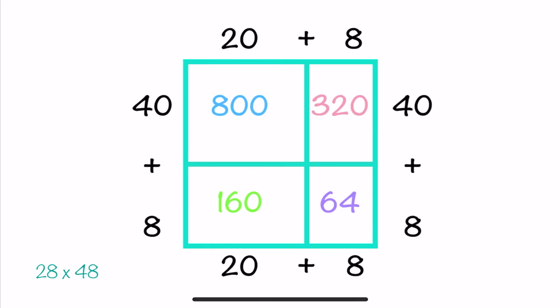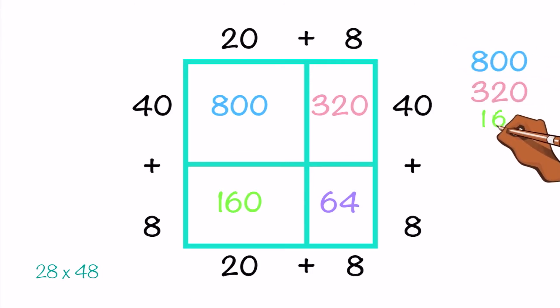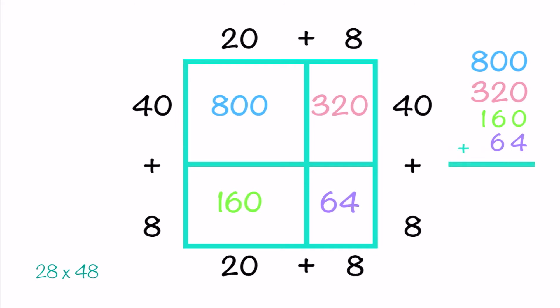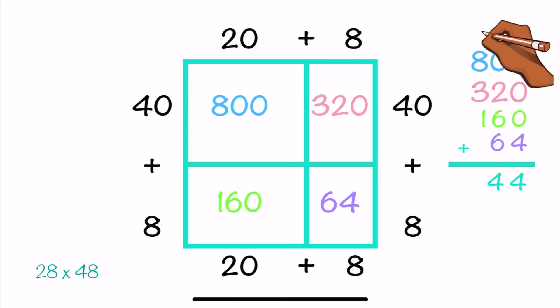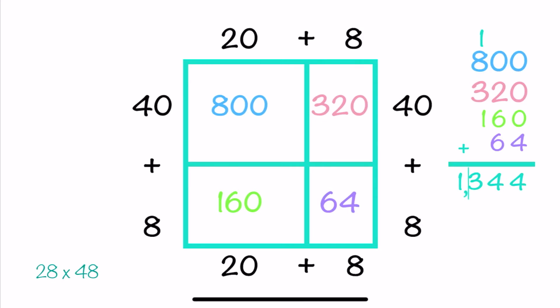Last step, we take our partial products and add them all together. 800 plus 320 plus 160 plus 64. When we add those together, we get 1,344. And there's our answer.